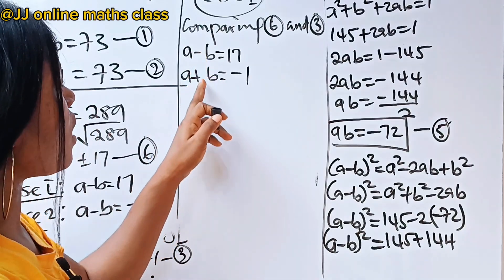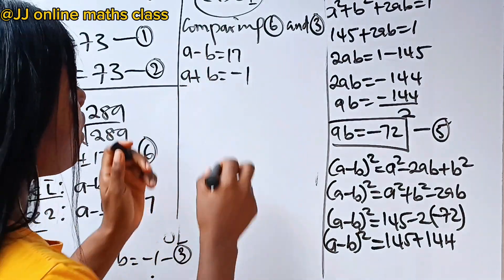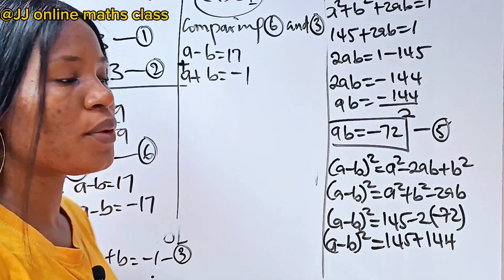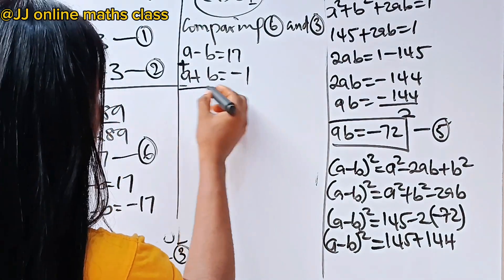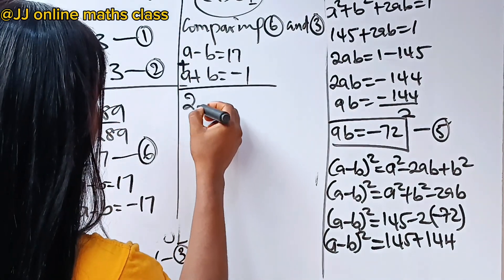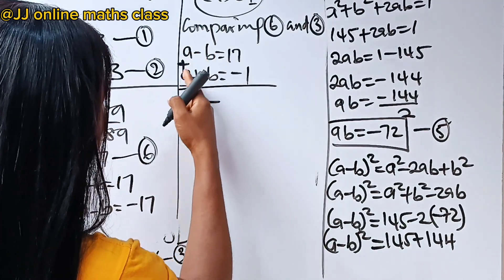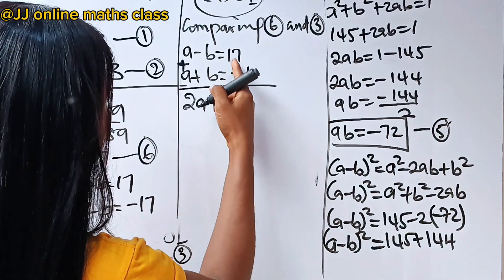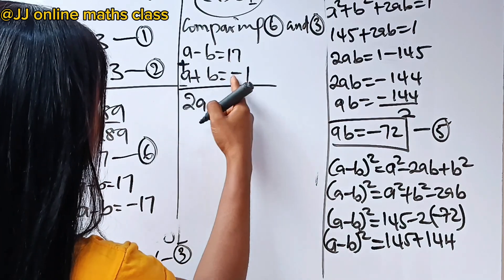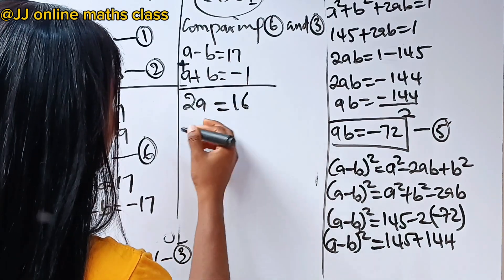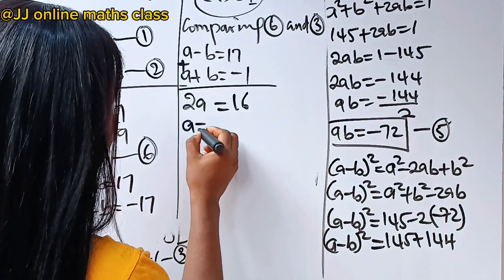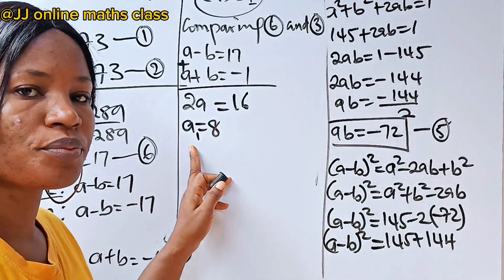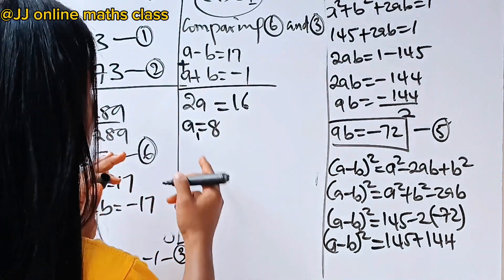Because we have two different signs on b, we add the equations to eliminate b. a plus a gives 2a, minus b plus b gives 0, and 17 plus minus 1 gives 16. So a equals 8. Let's call this a1.